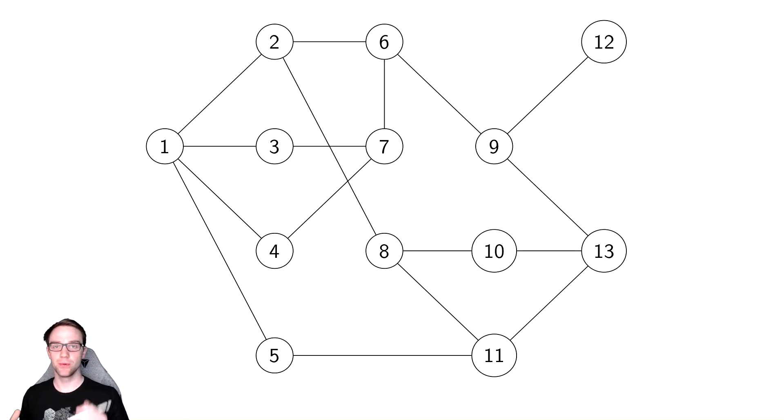We are now going to start working through our example of depth-first search so we can see how it works in practice. Similar to our previous example, we're going to use white to mean white, blue to mean gray, and red to mean black. So blue nodes will be nodes that have yet to finish, so we're going to start at node 1, as we did before.